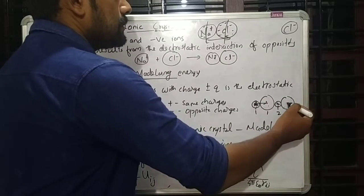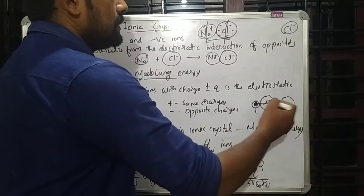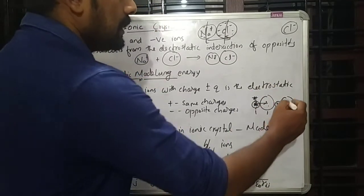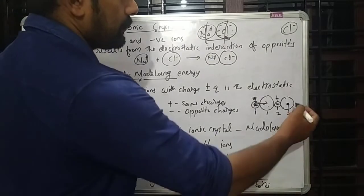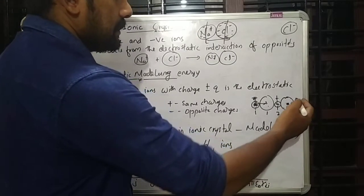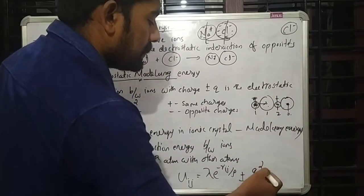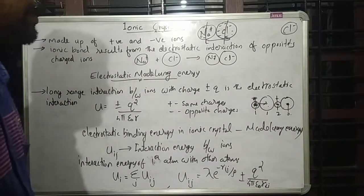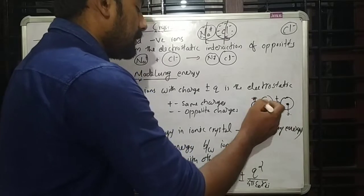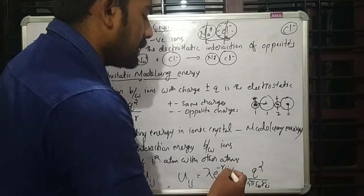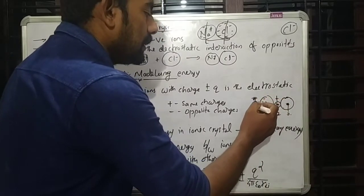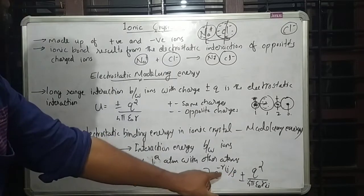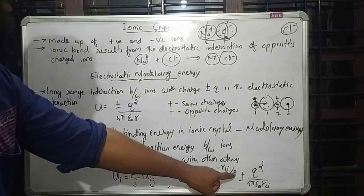An atom far from the reference atom will not feel the repulsive force because the electron clouds are not overlapping. The repulsive term λ·e^(-Rij/ρ) only acts for nearest neighbors, where electron clouds overlap and repel. For more distant atoms, only the electrostatic interaction energy ±Q²/4πε₀Rij applies, treating each ion as a point charge.